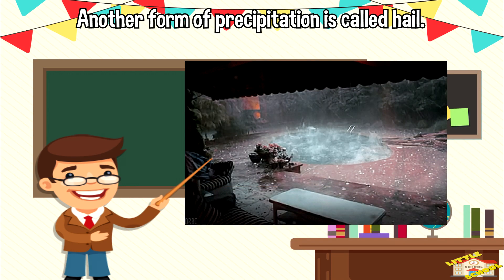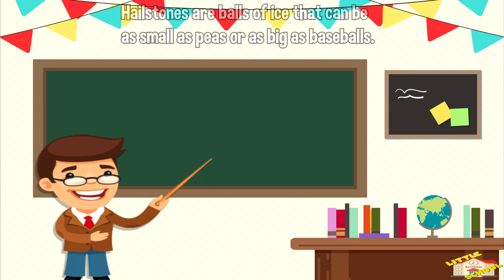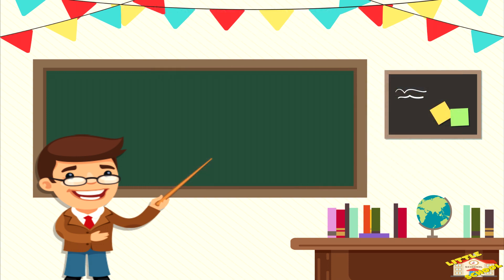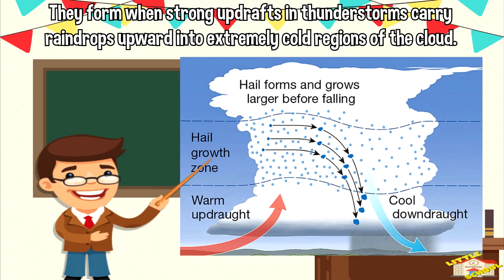Another form of precipitation is called hail. Hailstones are balls of ice that can be as small as a pea or as big as a baseball. They form when strong updrafts in thunderstorms carry raindrops upward into extremely cold regions of the cloud.